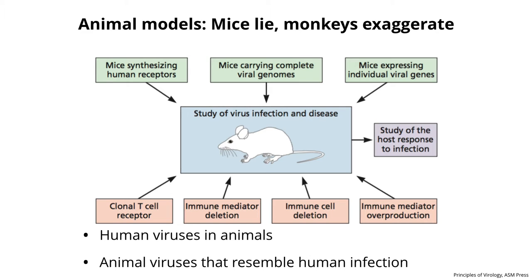We often use mice as animal models. They're convenient, easy to breed; you can genetically modify them, knock out genes, or add genes in. Unfortunately, they're not susceptible to all virus infections, so sometimes we can modulate mice — for example, give them human receptors for viruses, put the whole viral genome in a mouse to mimic a persistent infection, or put in individual genes. You can also modulate the immune system, and then infect these animals and study what happens.